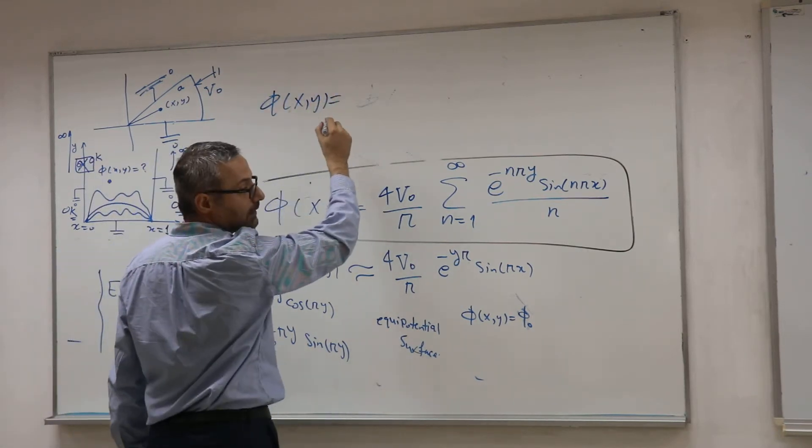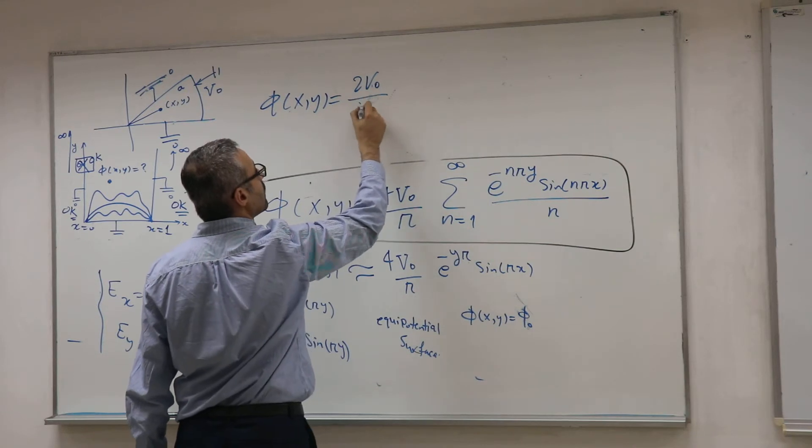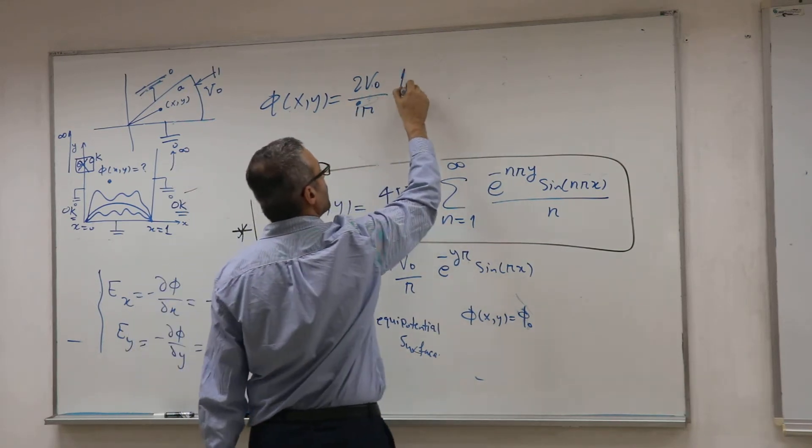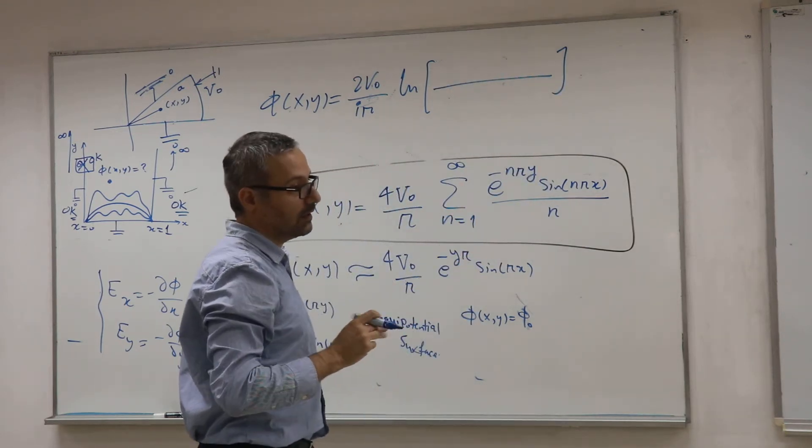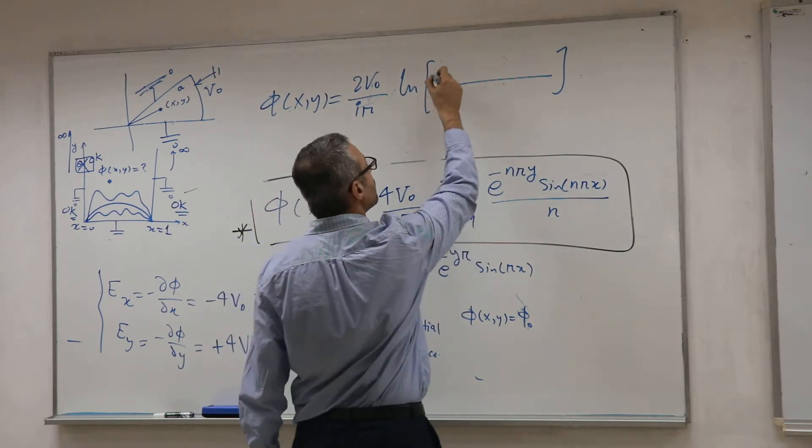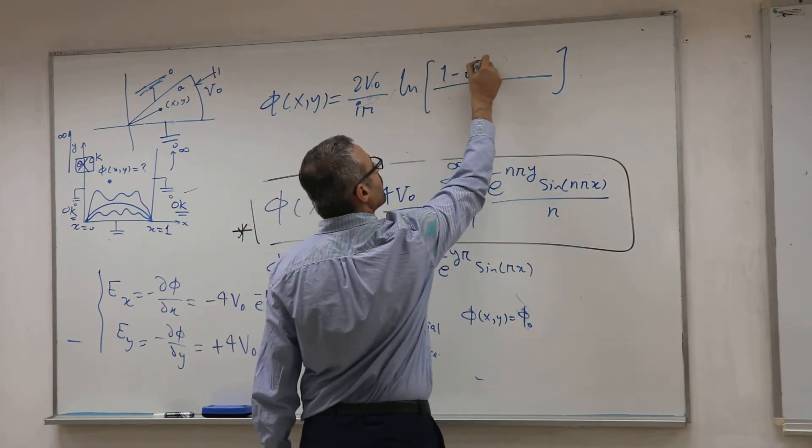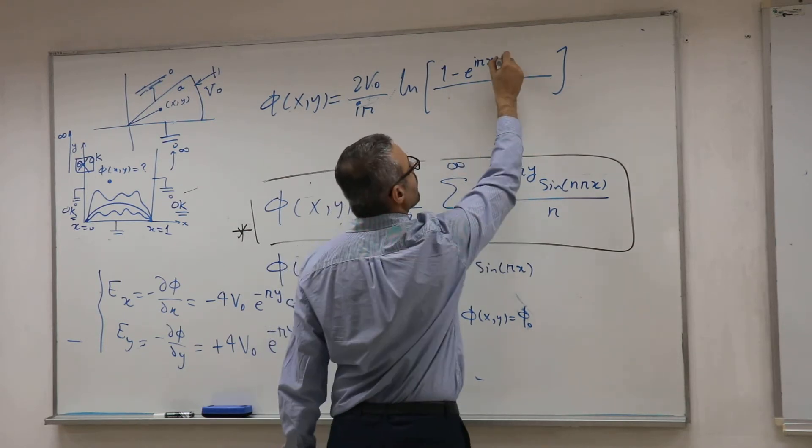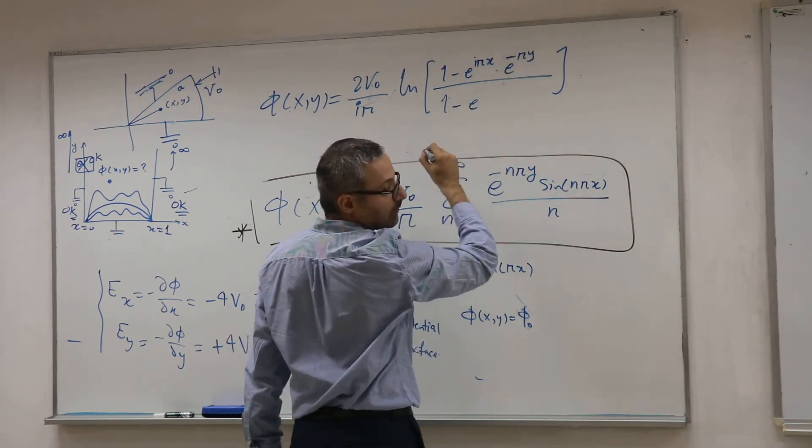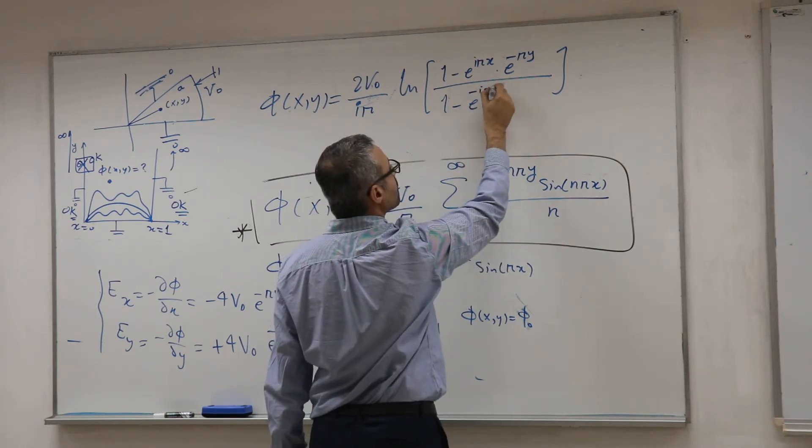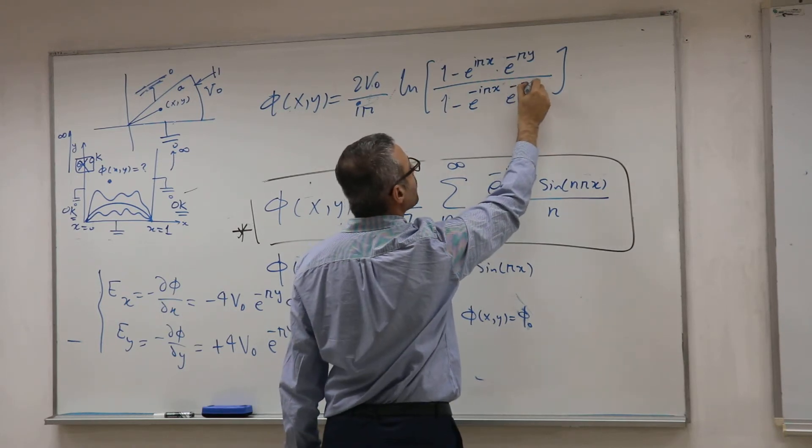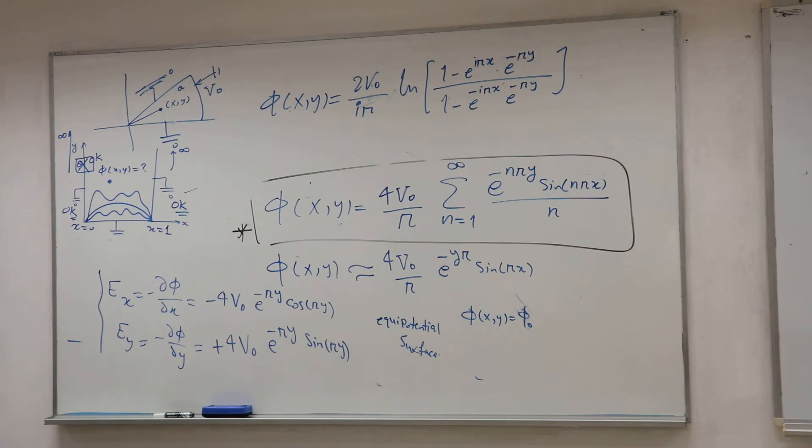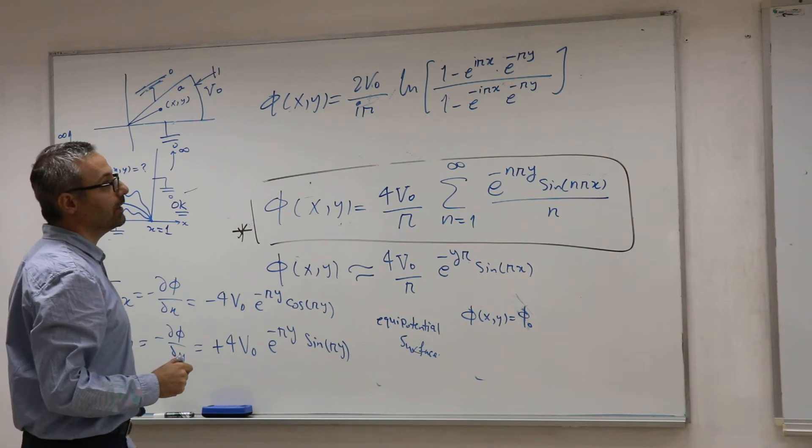So the potential can be written in the form of ln... Of course, you have ln of some complex number here. It's a little risky, but anyway. And you can make this equation more simplified, but I don't want to do that.